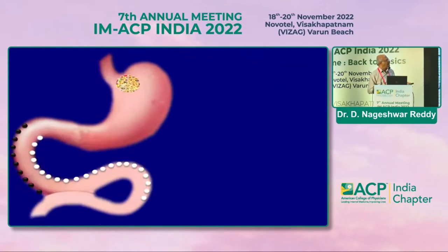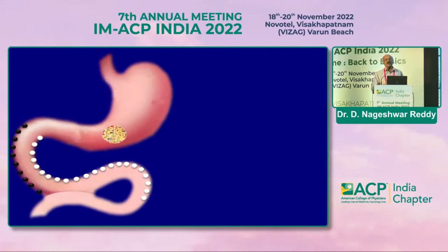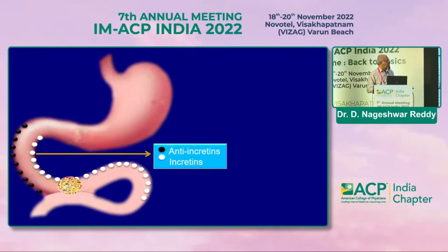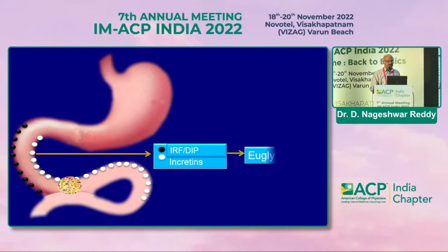When you have food, the digested food passes through the duodenum. As it passes through the duodenum, there are enteroendocrine cells — the neuroendocrine system of the duodenum — which get stimulated by the food. This stimulation results in a variety of hormones. Those which are pro-insulin are called incretins; the opposing ones are called anti-incretins. There are now a variety of these identified. The balance of incretins and anti-incretins results in euglycemia and normal metabolism.